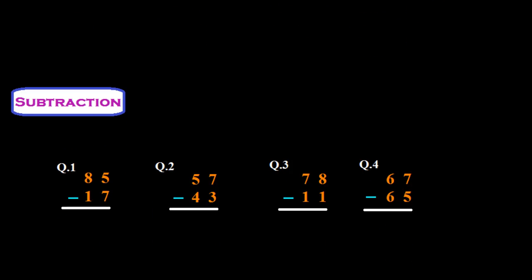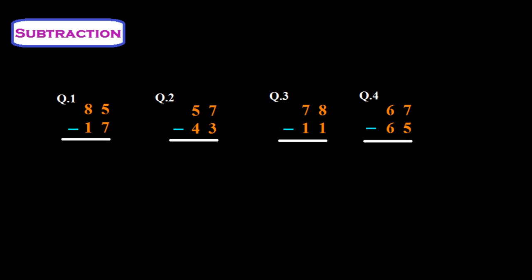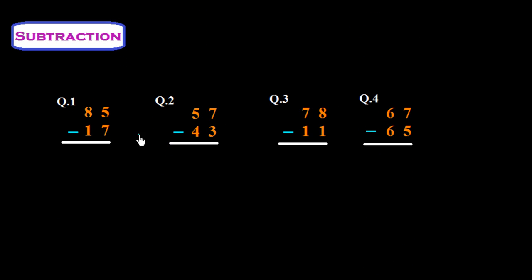Now I would like to explain subtraction — how we subtract numbers. In question number 1 we have to subtract 17 from 85. In the unit place, 5 is smaller than 7, so it is not possible to subtract 7 from 5 directly, so we borrow 1 from 8.